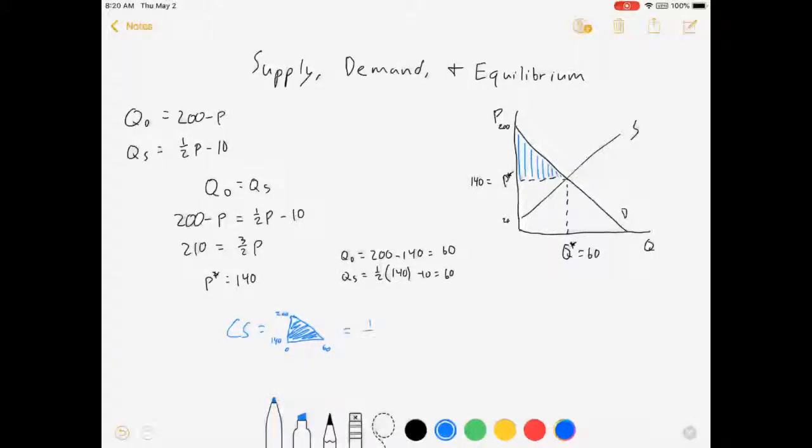So, the area of that triangle, let's see, triangle formula, one-half times base times height equals one-half times 60 times 60. And that is going to equal 1,800. Cool. Next, let's do producer surplus.